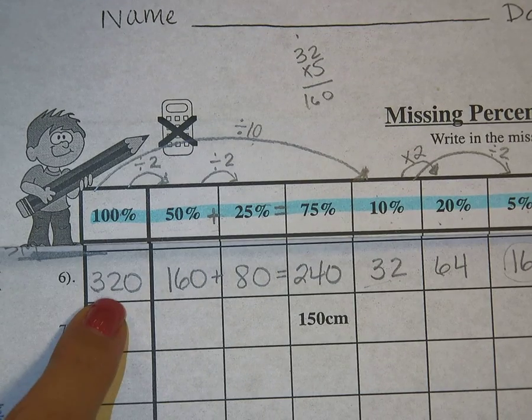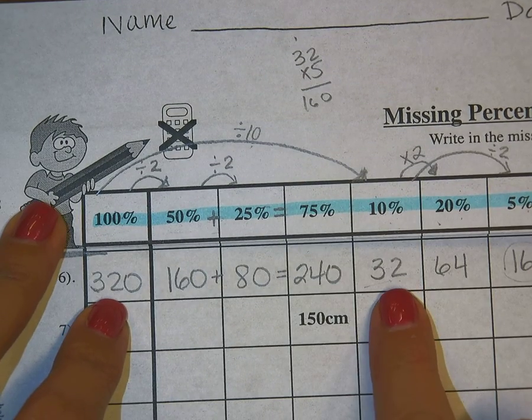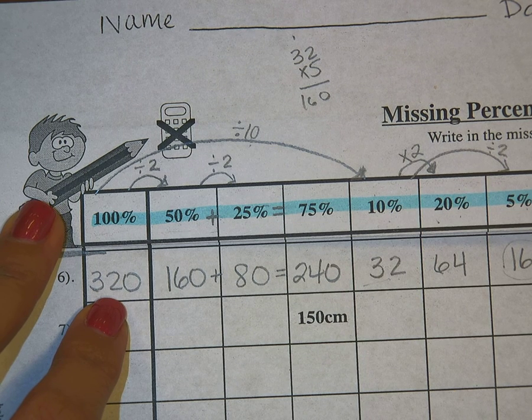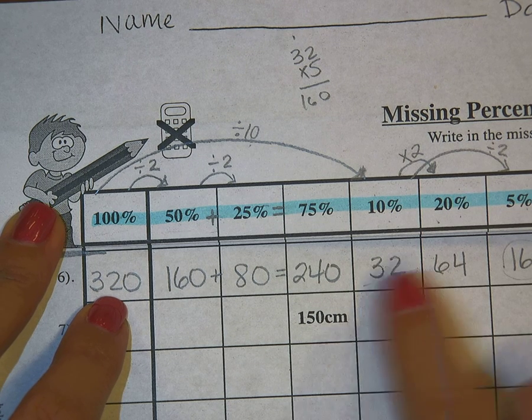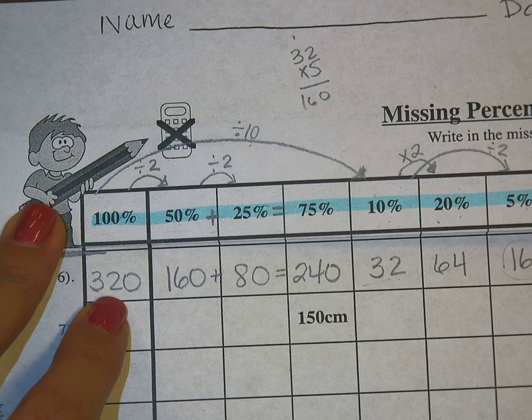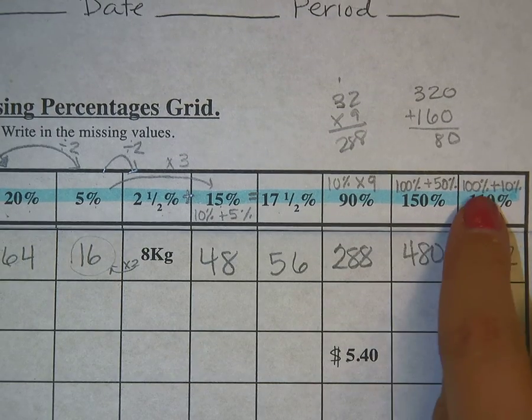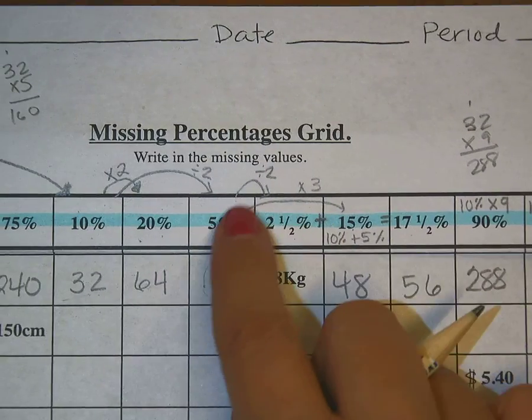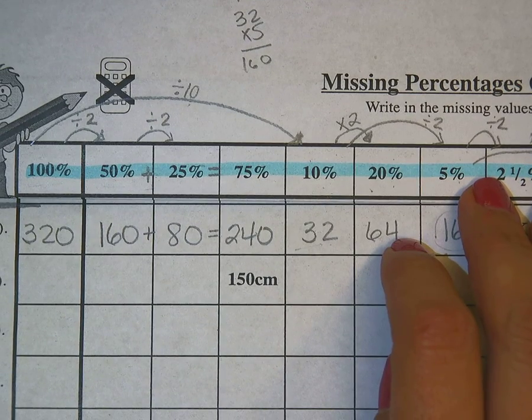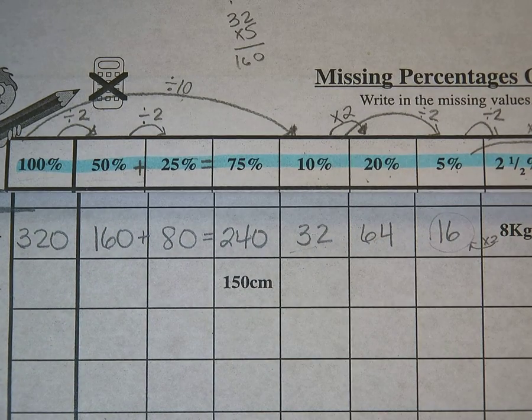And the last one is my 100% plus 10%. So 100% is 320 plus 32. That's 352 for 110%. So as long as you keep in mind the shortcuts that we've added to the top here, finding each percent of a number is going to be really simple. That's really useful. Good. Thank you.